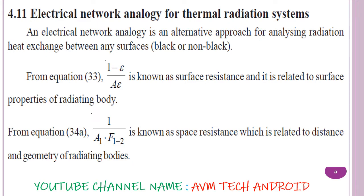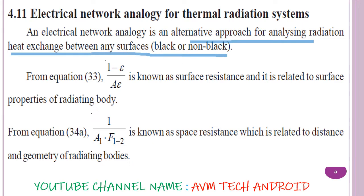In the last lecture we discussed the electrical network for thermal radiation systems and the theory related to heat transfer between two non-black bodies. Links are available in the description box. Now we will start with the electrical network approach — this is one of the easiest approaches to solve problems related to heat transfer by radiation, whether for a black body, non-black body (grey body), or real body.